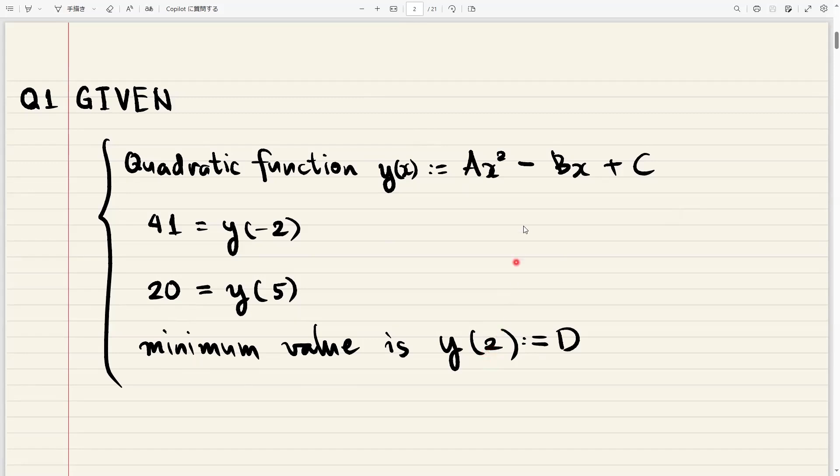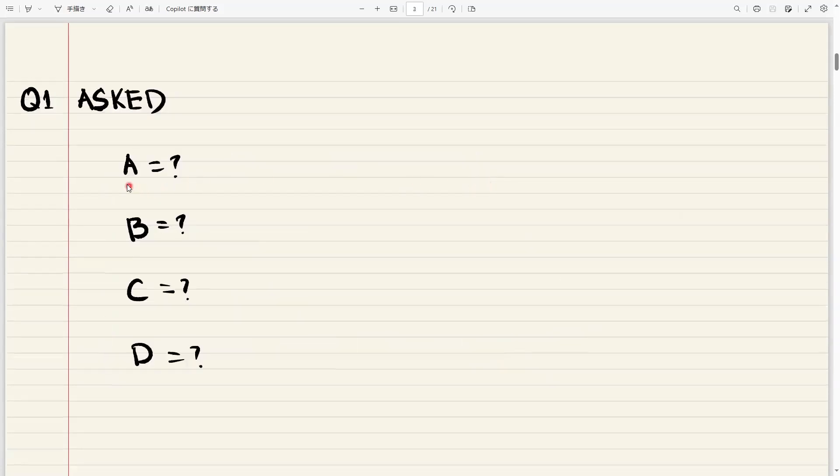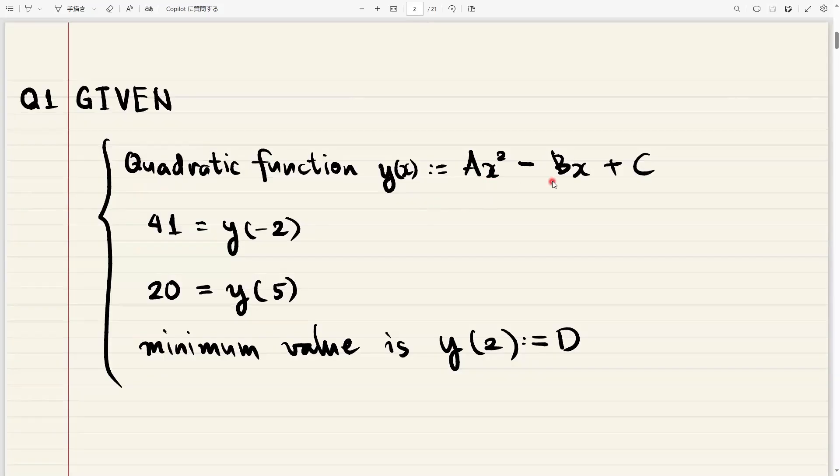We're also told that the minimum value of this function happens when x equals 2. Now, we call this value d in the problem, and the problem asks us to find a, b, c, and d. So again, a, b, and c are the constants in the function, and d is the minimum value which happens at x equals 2.